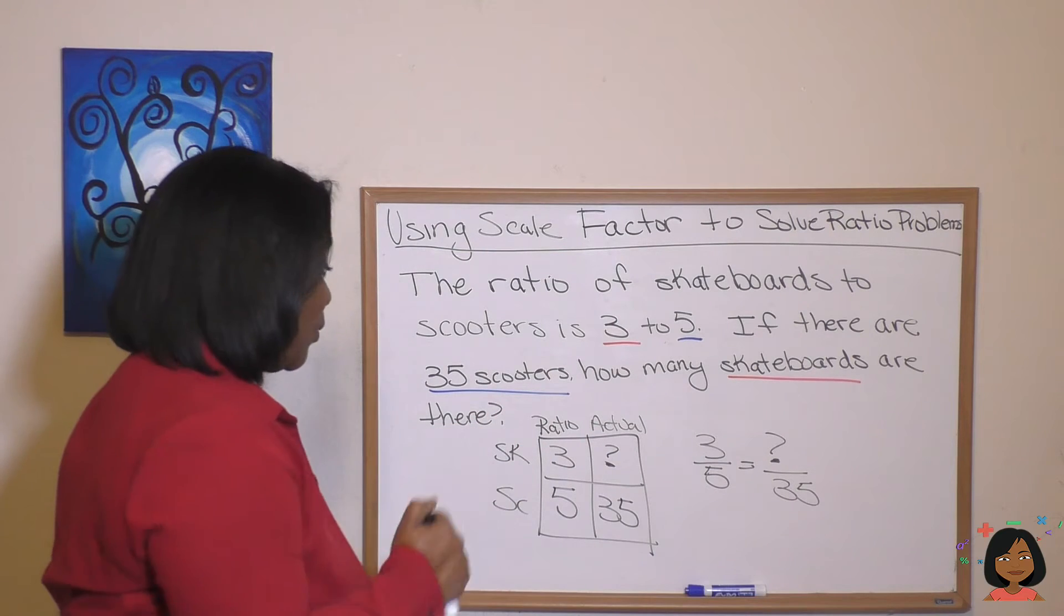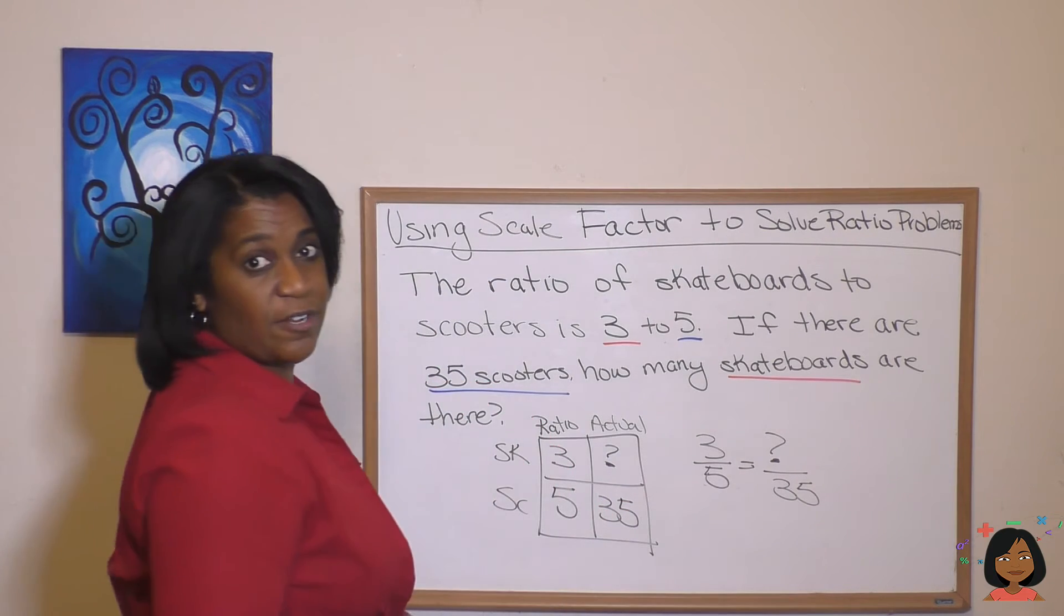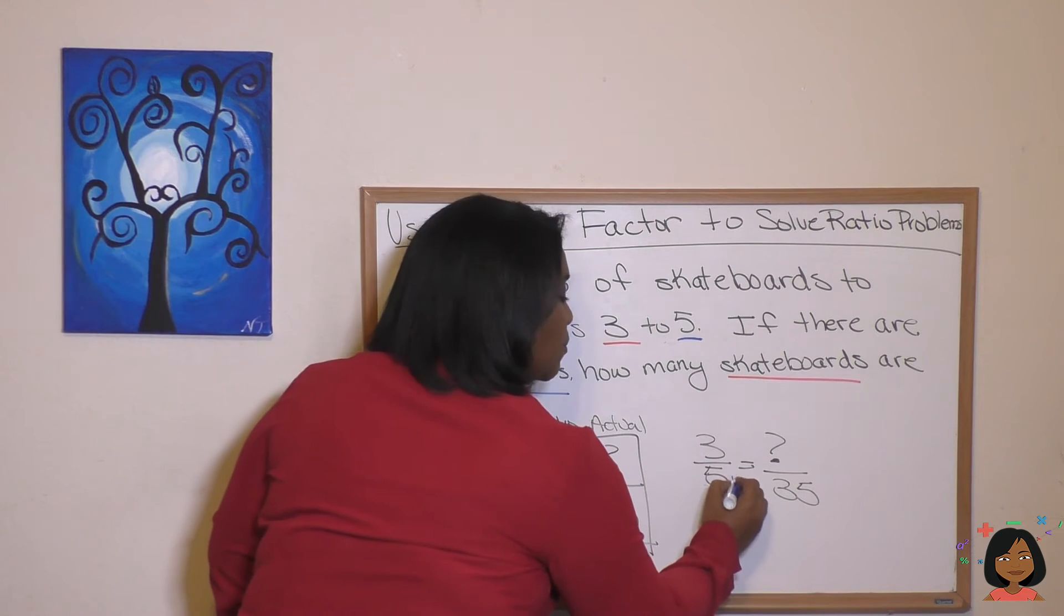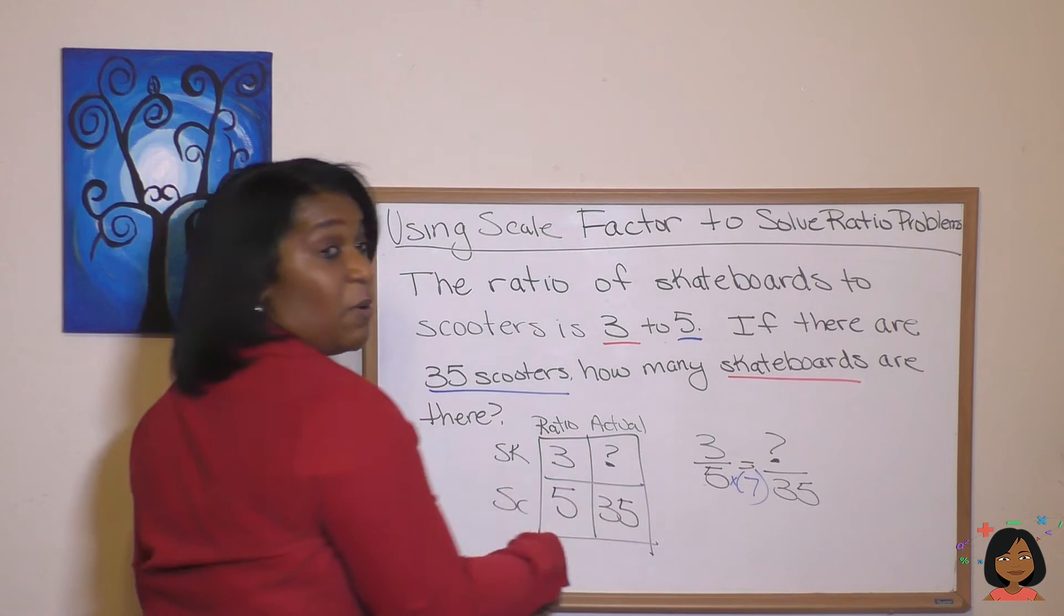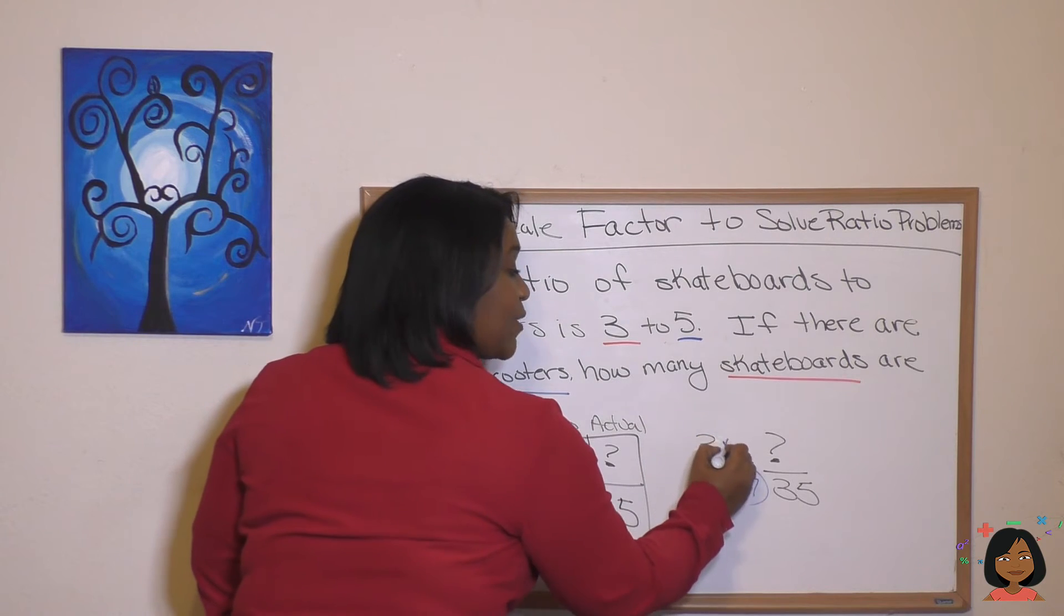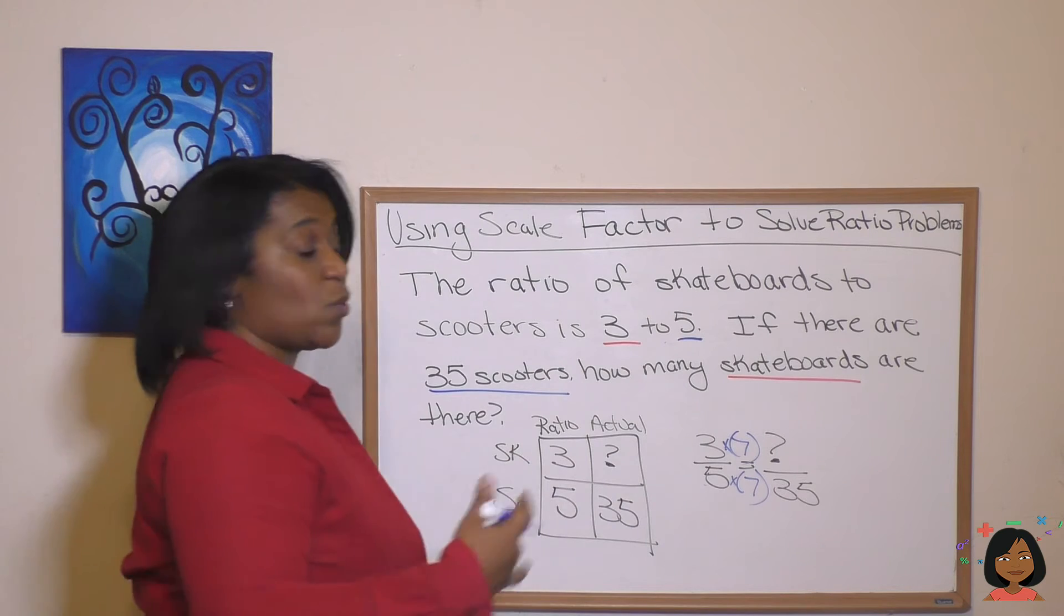And that's how we will solve. So we're going to start here. Five times what is 35? Five times seven is 35. So let's put a seven on the bottom. But what you do to the bottom, you've got to do to the top. So let's multiply the top by seven as well.